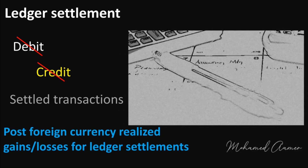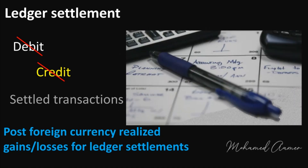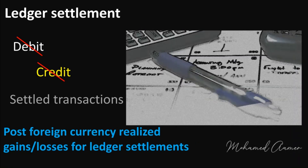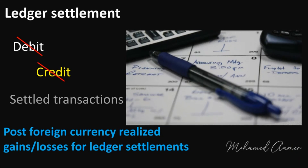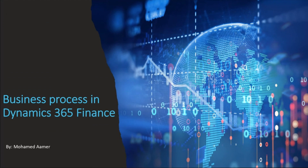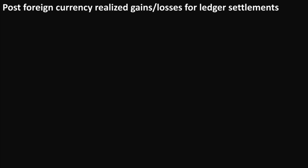This feature will autonomously calculate and record realized gains and losses in the reporting currency when there is a variance between the reporting currency values of debits and credits in ledger settlements. I am Mohammed Amir, sharing thoughts around business processes within Dynamics 365 Finance.